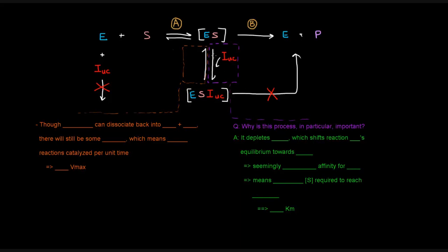Why is this process important? When the uncompetitive inhibitor binds the enzyme-substrate complex, it depletes the amount of enzyme-substrate complex. Since there's an equilibrium between enzyme plus substrate and the enzyme-substrate complex, depleting the enzyme-substrate complex shifts that equilibrium to produce more — it shifts reaction A's equilibrium towards the right. This means more enzyme and substrate will come together and bind to make the enzyme-substrate complex to account for that loss.